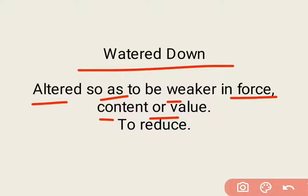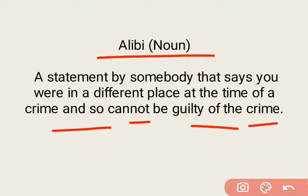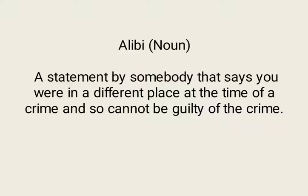Next word is 'alibi'. Alibi is a noun. Iska matlab hota hai a statement by somebody that says you were in a different place at the time of a crime and so cannot be guilty of the crime. Koi bhi aisa statement ya proof jo yeh sabit karta ho ki crime time pe aap crime scene pe na hokar kisi aur jagah the — woh statement aapko innocent prove kar de aur aapko guilty prove na kare. Toh koi bhi aisa statement jo proof kare that you were not at the crime scene at the time of crime.